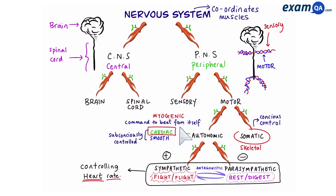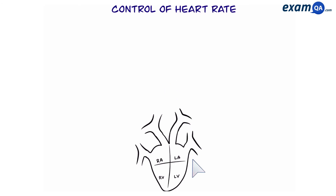The heart beats by itself because it's myogenic. However, the nervous system only speeds it up and slows it down. Now let's look at how the heart rate is controlled. In the wall of the right atrium, we have a bunch of cells that make up something called the SAN, also known as the sinoatrial node, or the pacemaker. Here we have the aorta and carotid artery, which contain two very important types of receptors.